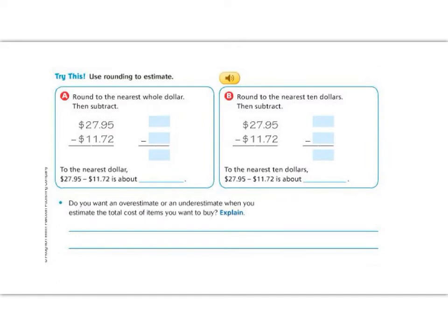Let's continue our learning with the try this section. It says we are going to use rounding to estimate. In try this A, it says round to the nearest whole dollar. So again, a whole dollar has no cents left over. So we only want before the decimal. So if we look at 27.95, the nearest whole dollar, we would look at this place value here. 7, and then we look next door. Next door, I see a 9. 9 is going to make me round up. So 27.95 is going to round to 28.